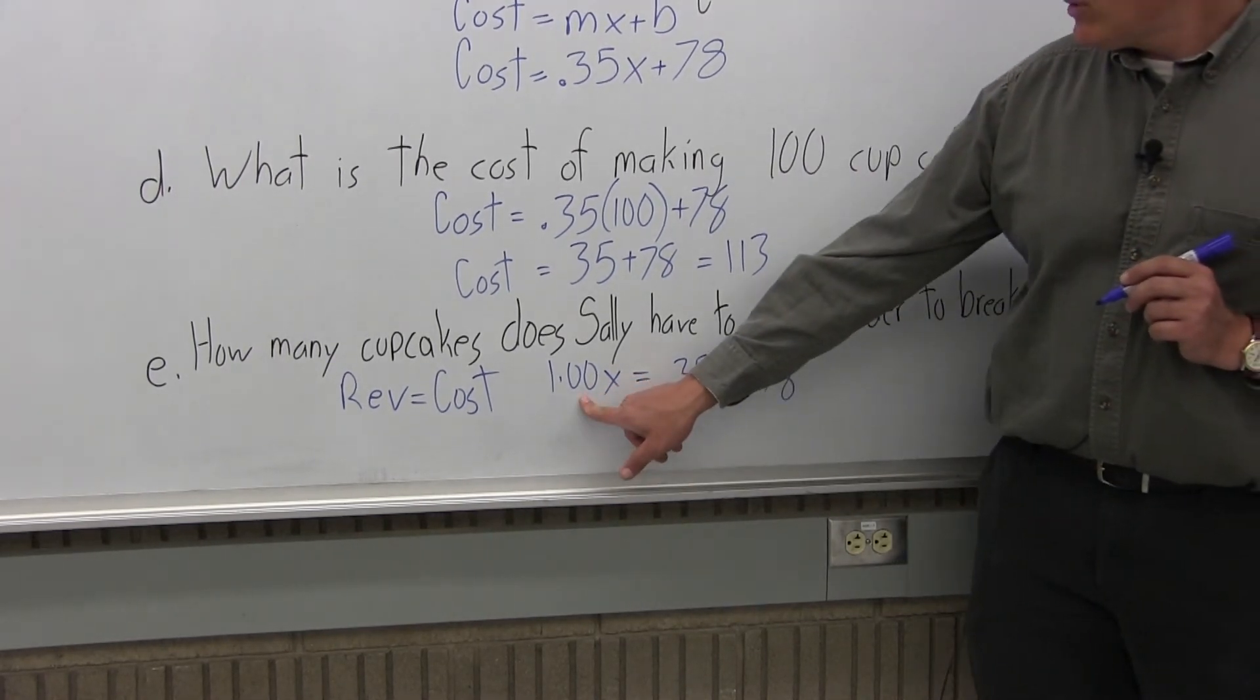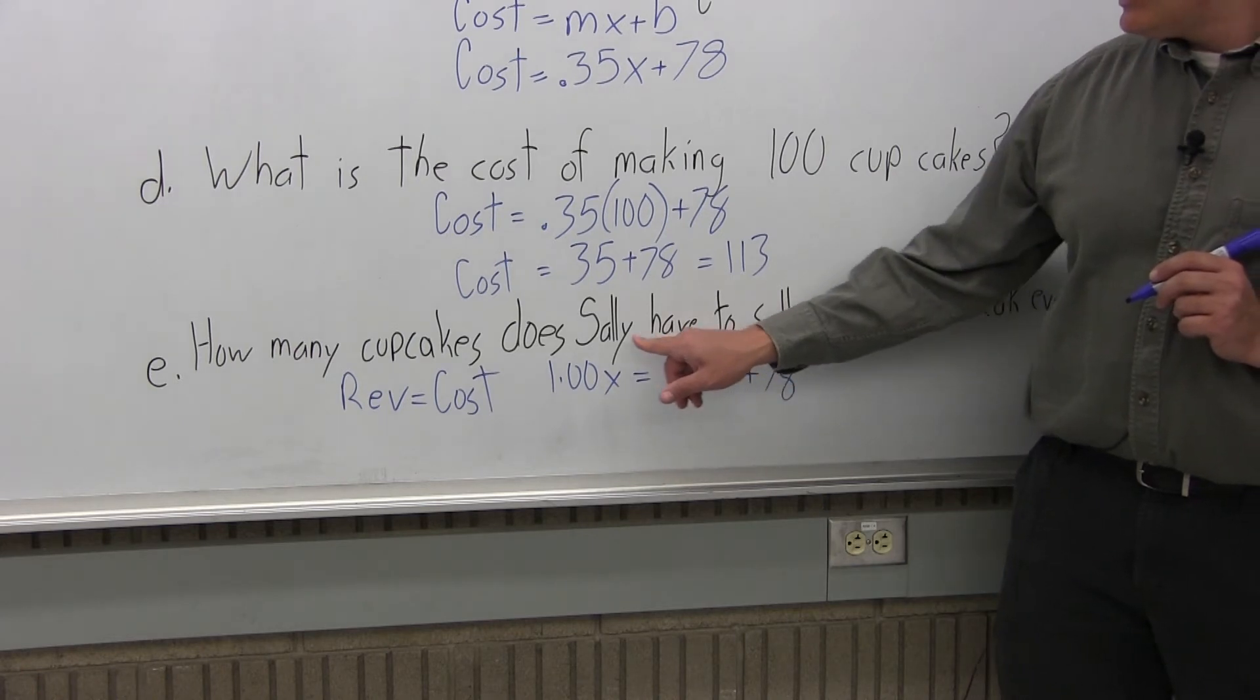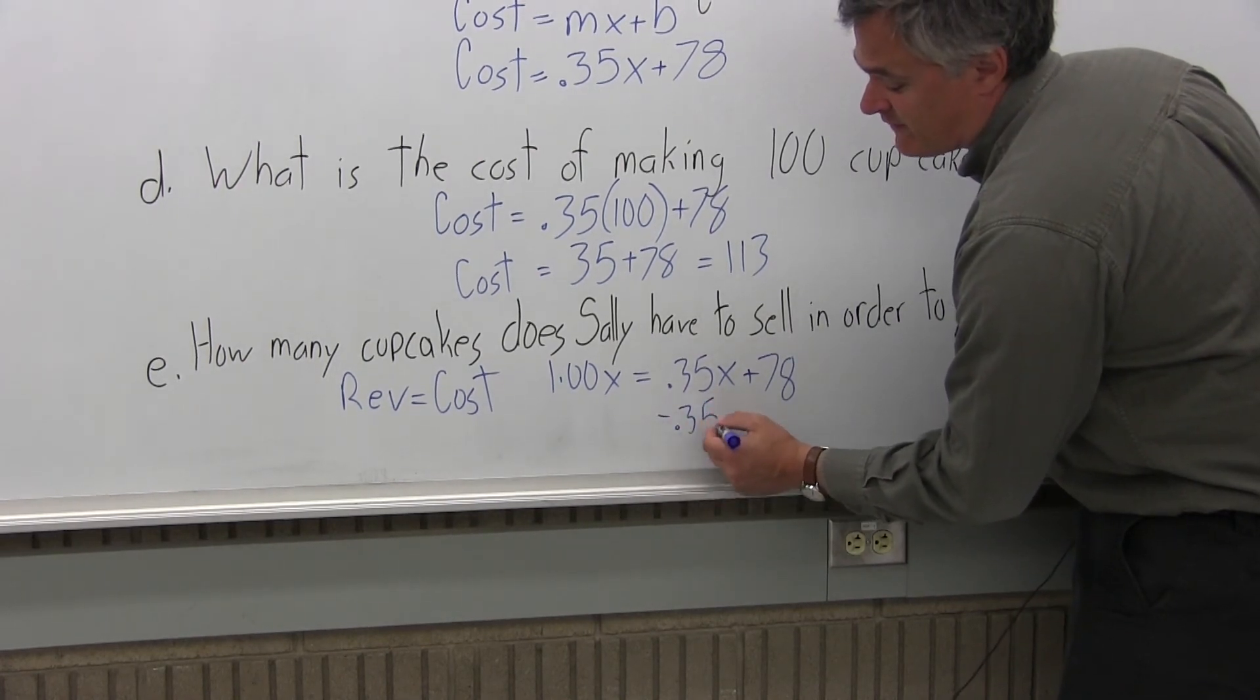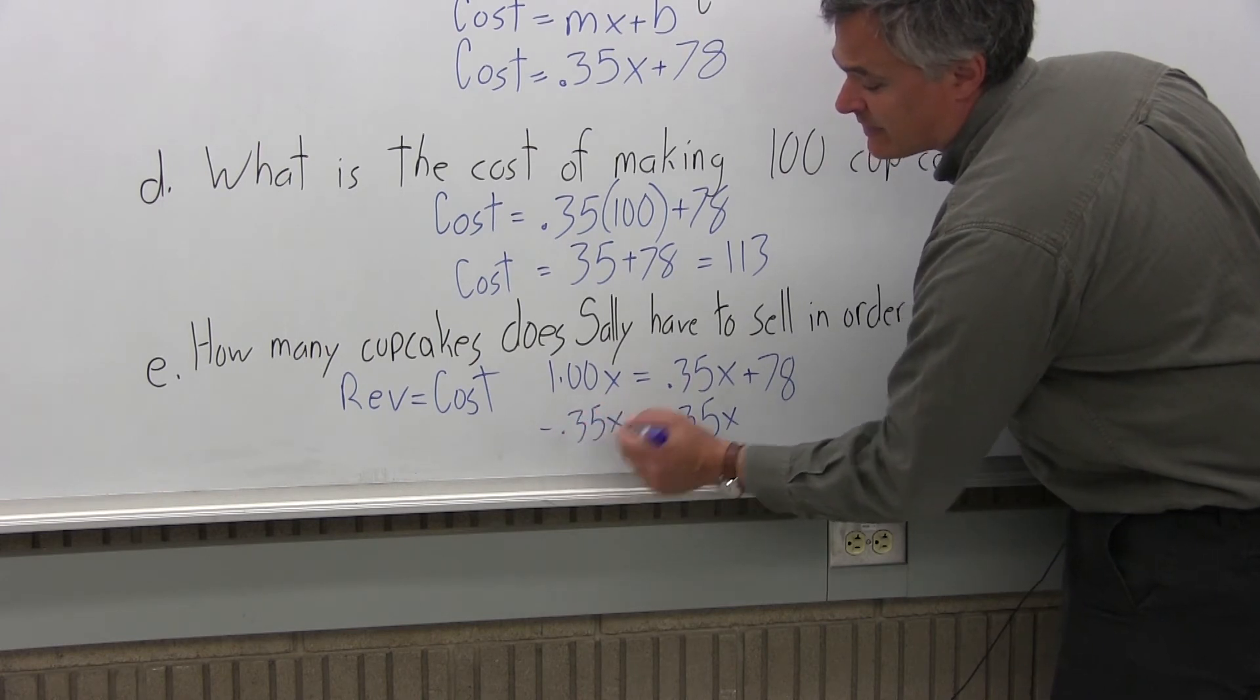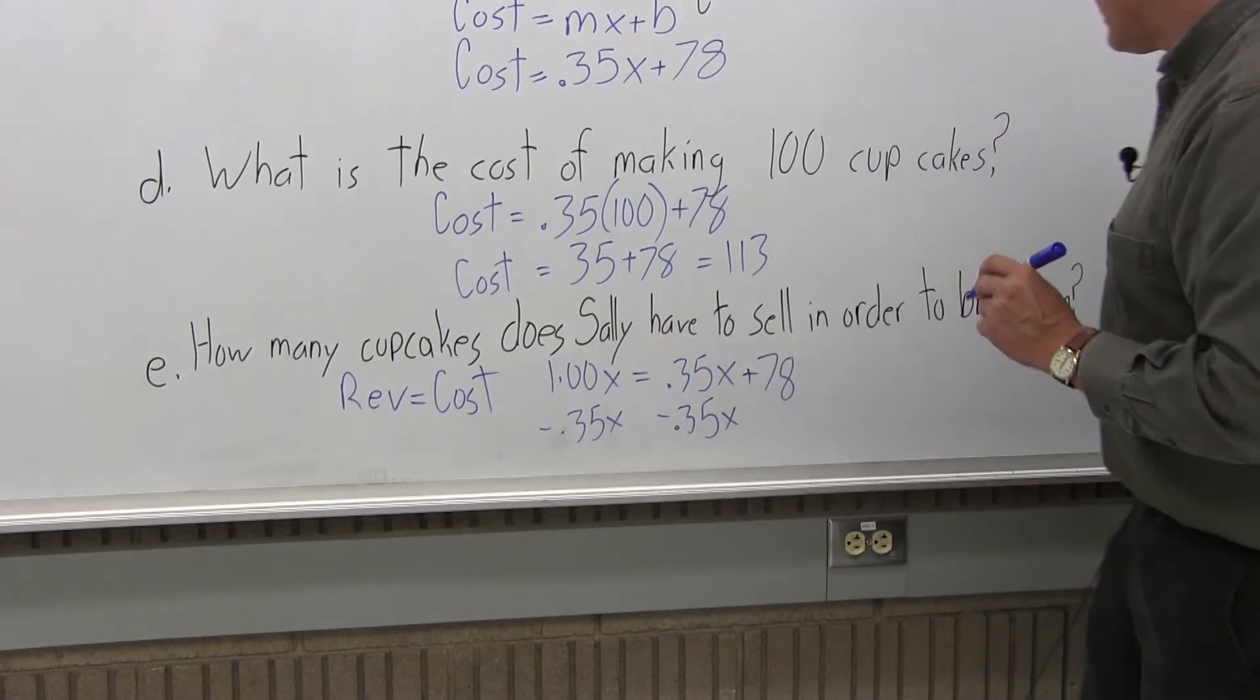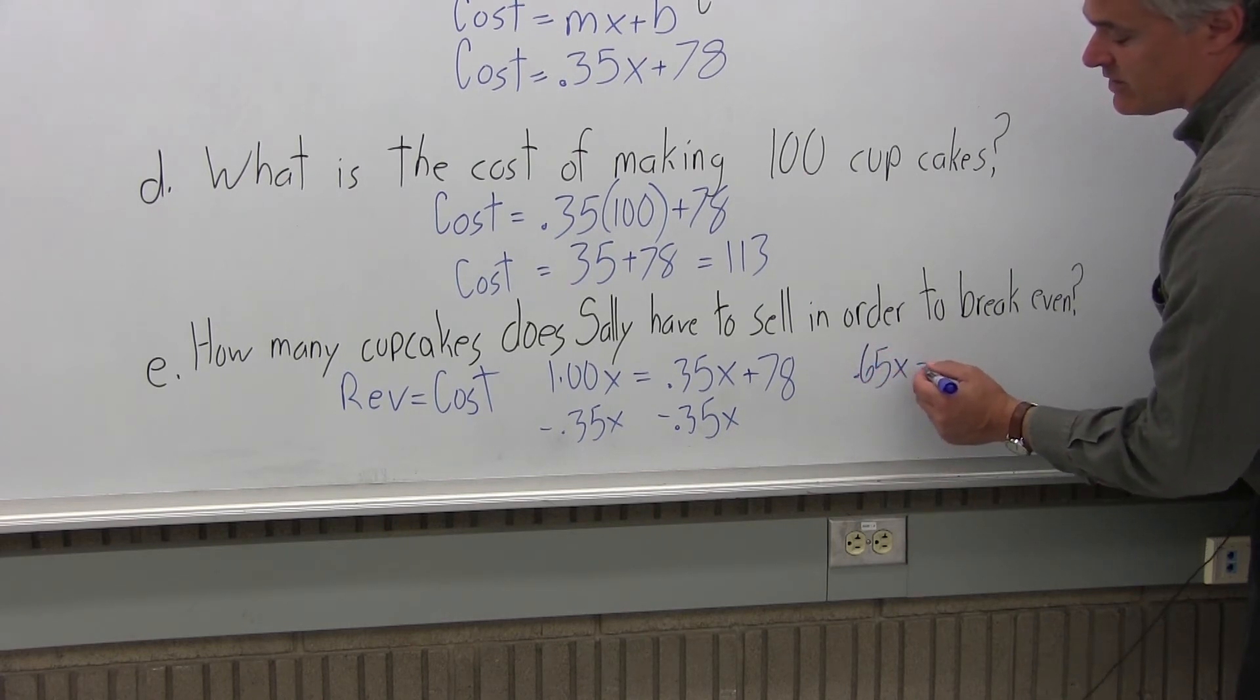Revenue $1X equals cost .35X plus 78. So to solve for X, I want to take the .35 and bring it to the left. So I'm going to subtract .35X from the left and from the right. Now on the left, $1X minus .35X is going to give me .65X.